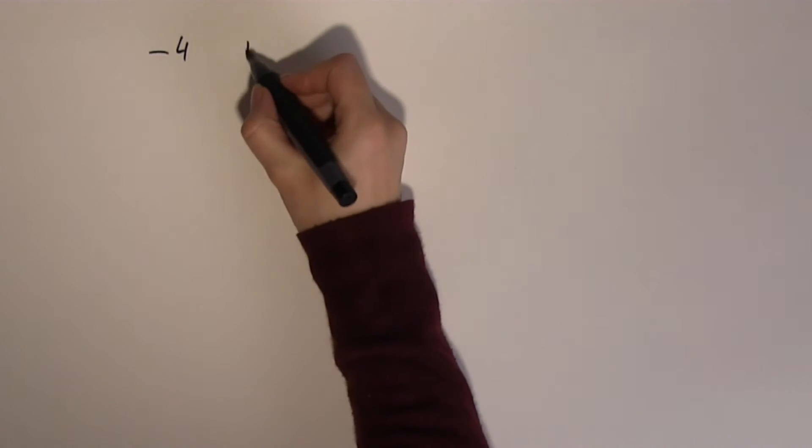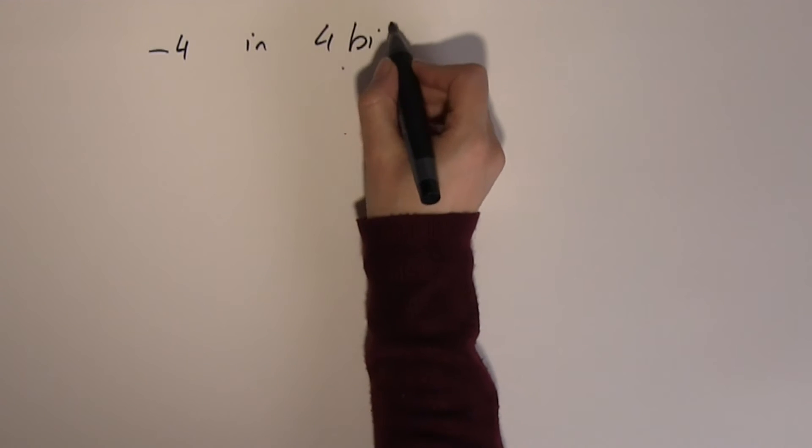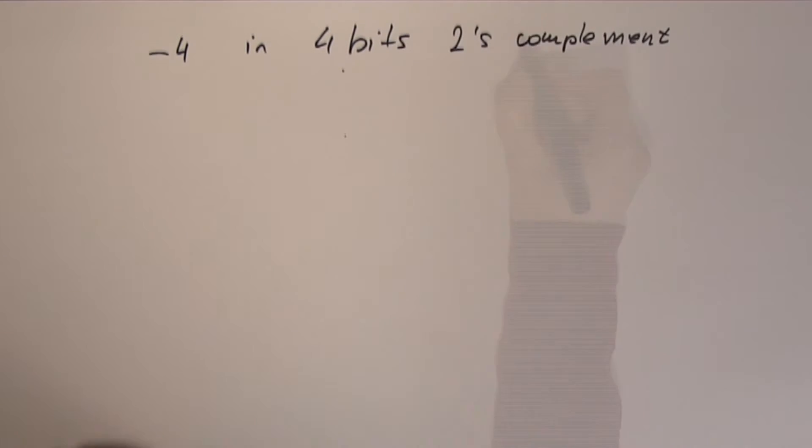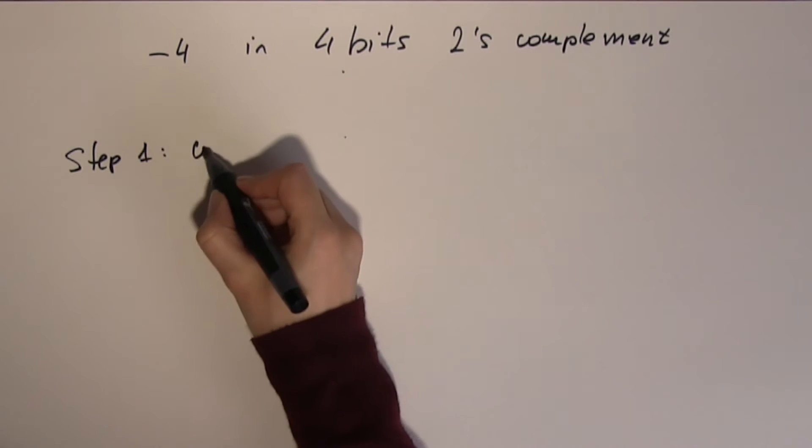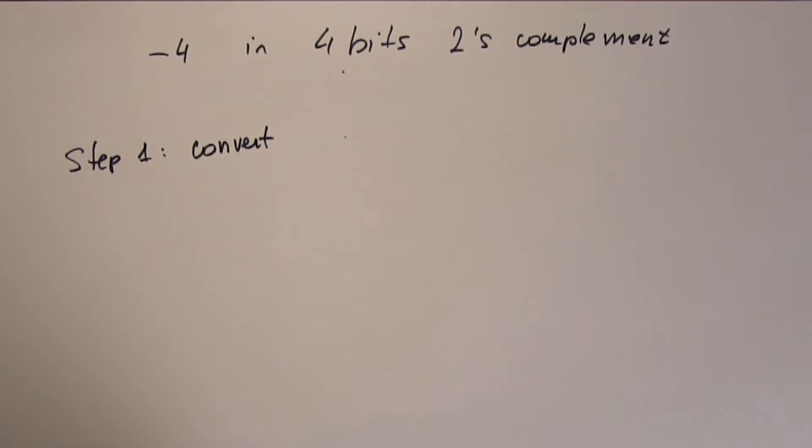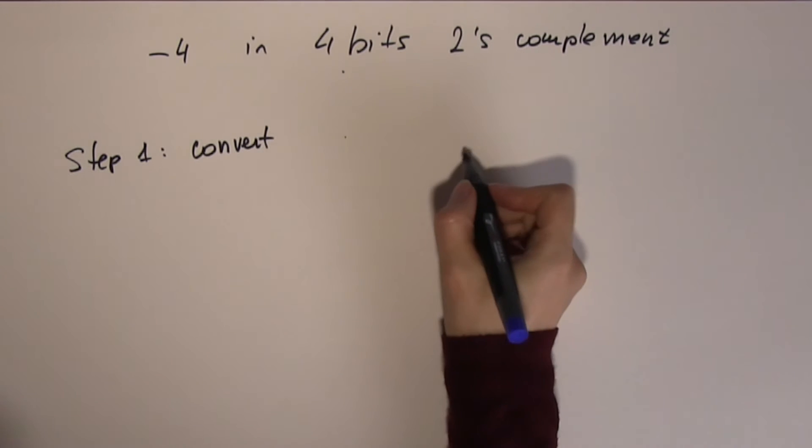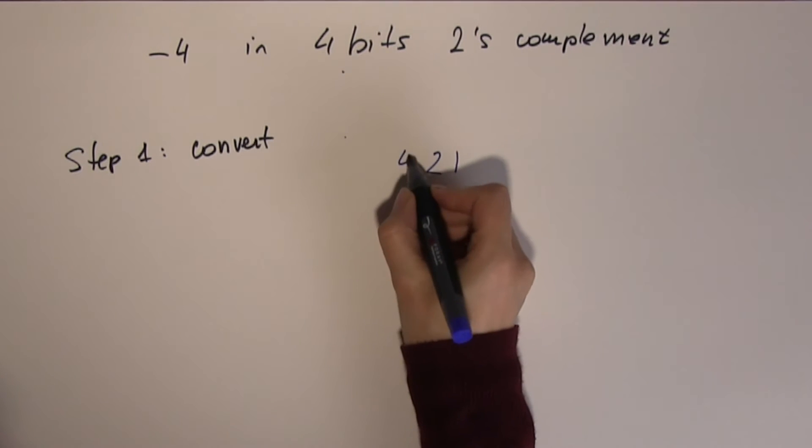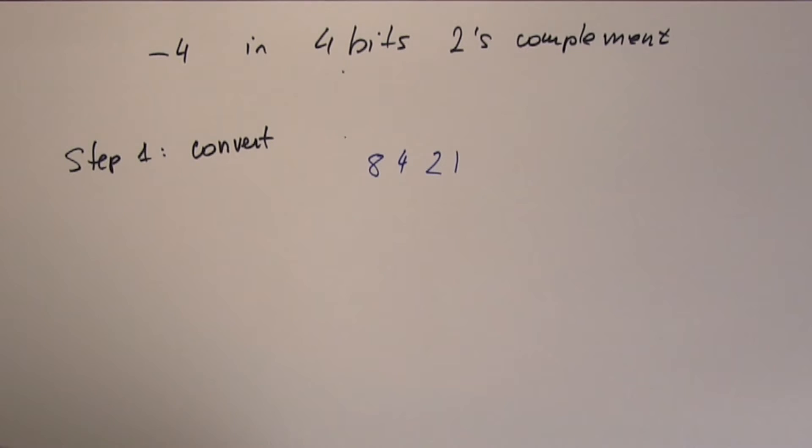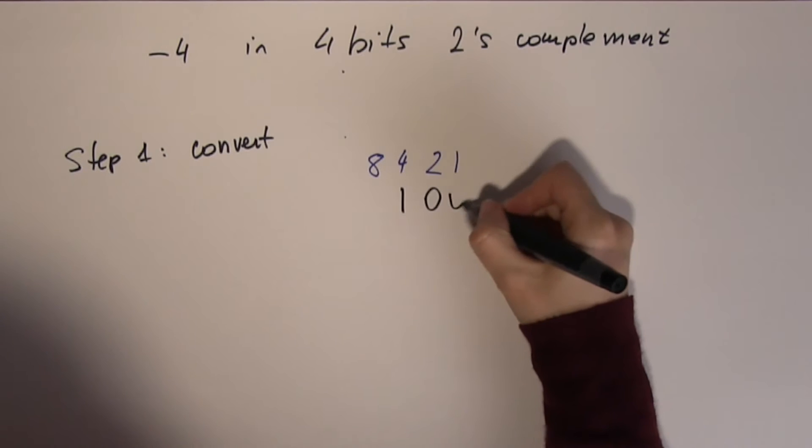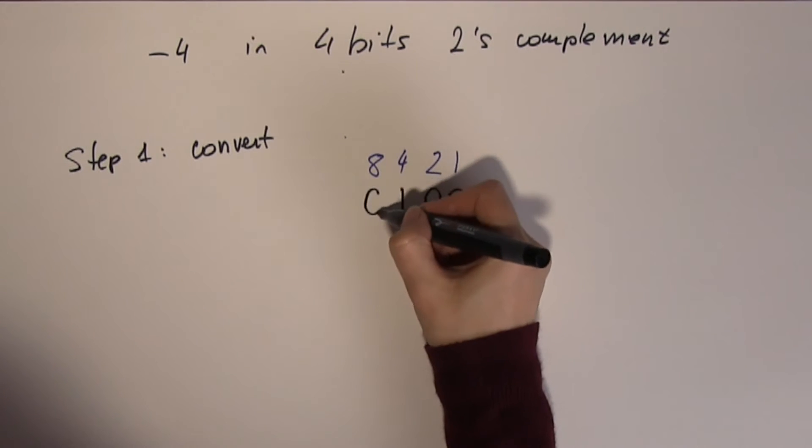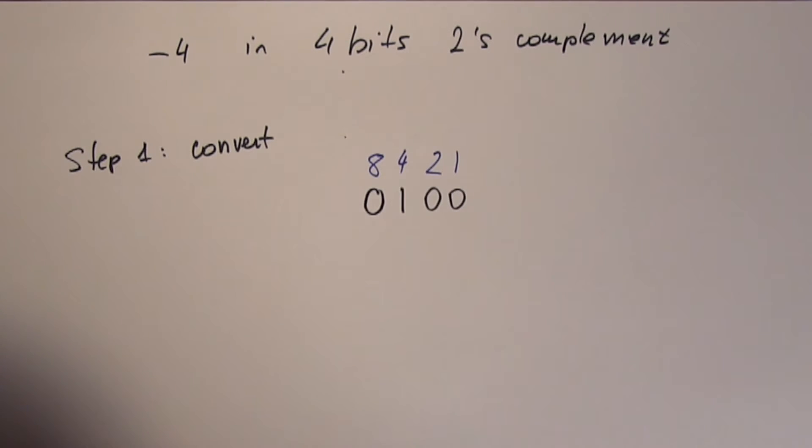What would be negative 4 in 4-bit 2's complement? Step 1: convert. We're using 4 bits: 1, 2, 4, 8. And 4 is just 1, 0, 0. Don't forget, we need the 0 first here.